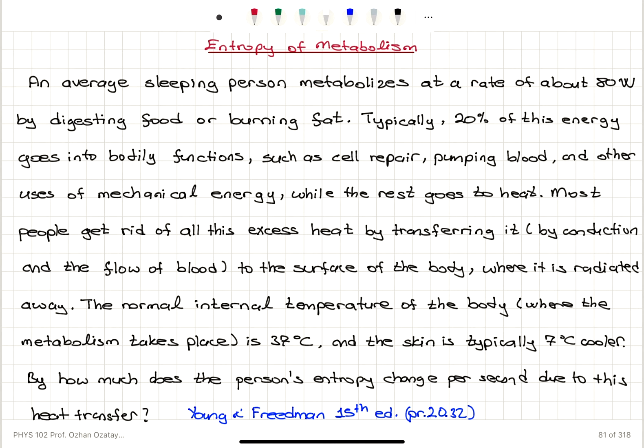All right, we talked about entropy of metabolism. So an average sleeping person, that's basal metabolic rate, is 80 watts, digesting food, burning fat. Typically, 20% of this energy goes into bodily functions and the rest goes to heat. So 80% of 80 watts, 64 watts goes to heat. This excess heat is transferred to the surface of the body where it is radiated away. The excess heat is introduced in the interior and then it is radiated away from the surface of the body.